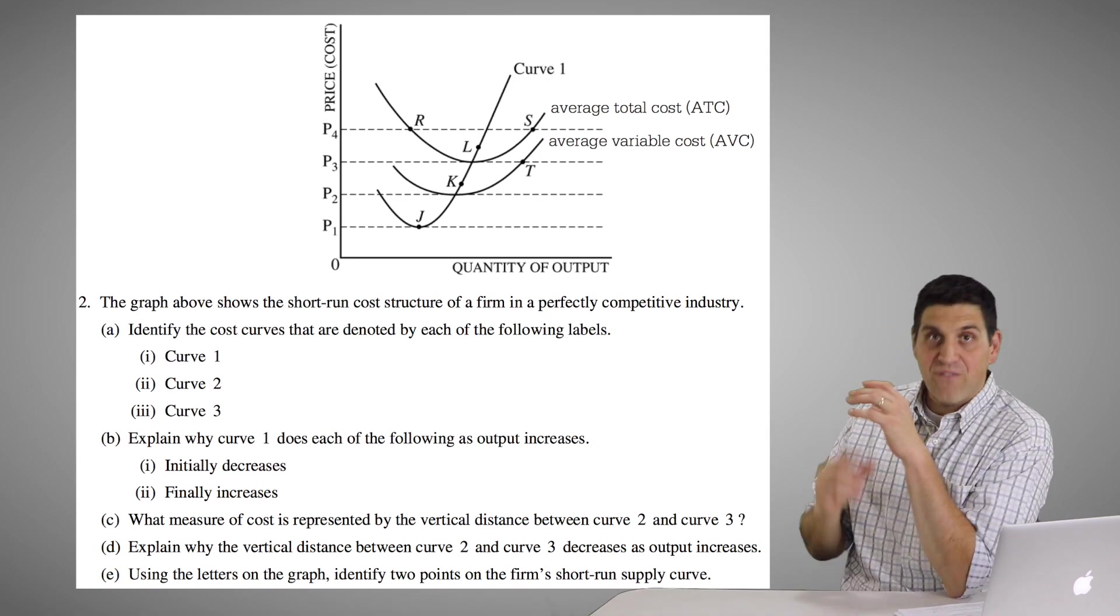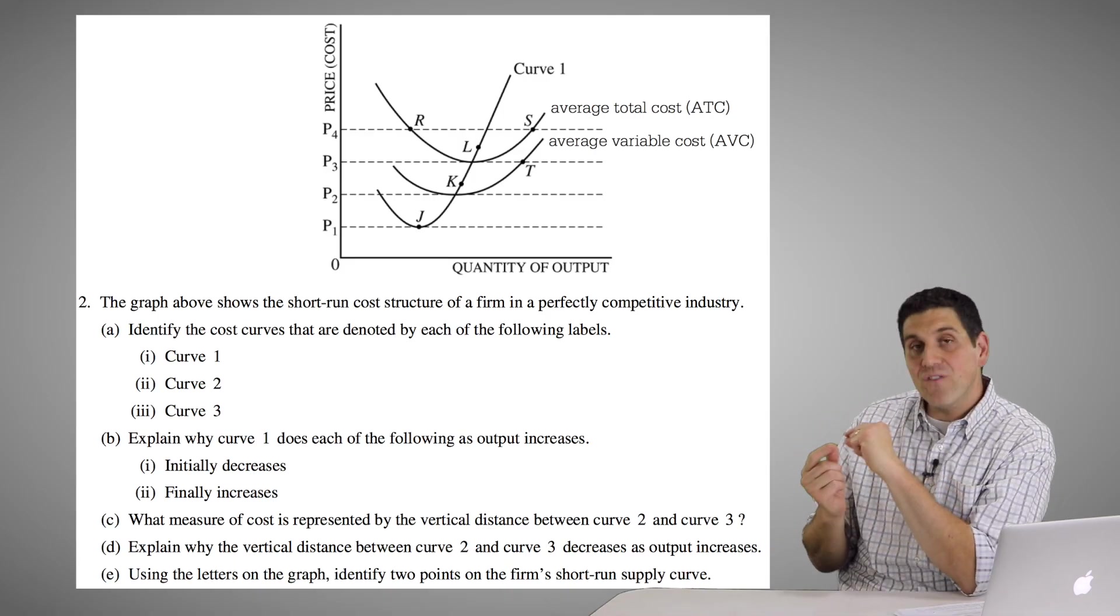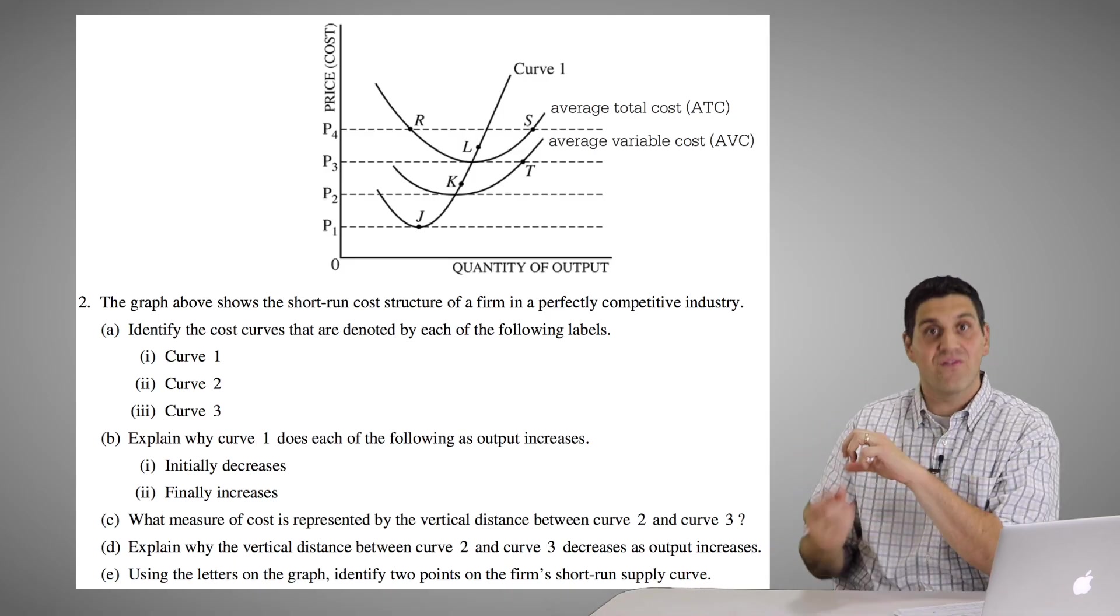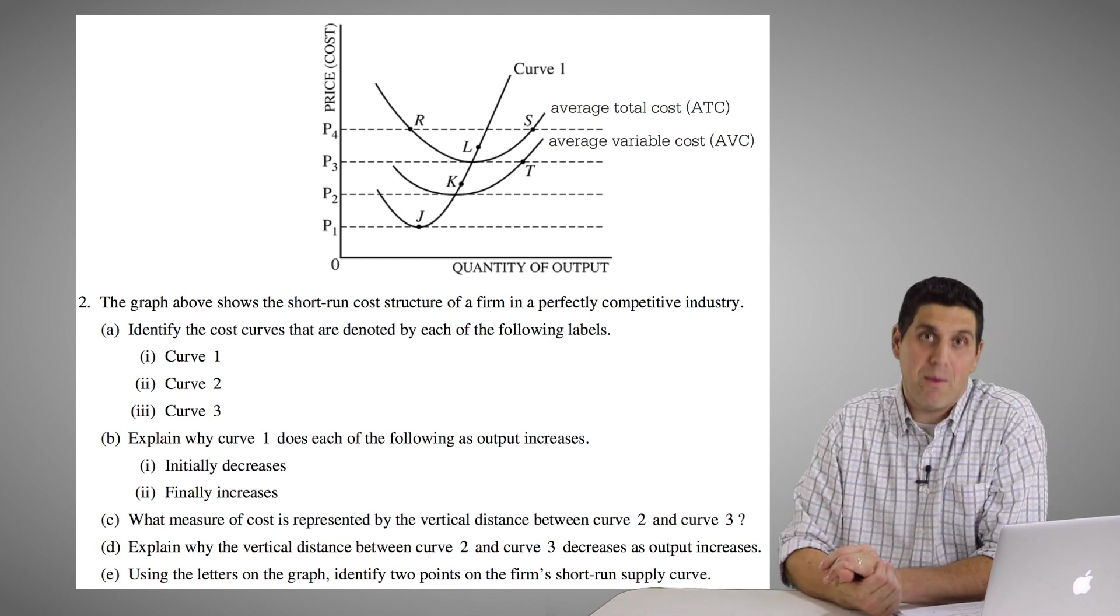So again, one more time, if you have a fixed cost that's set, as you produce more and more output, the average fixed cost, the fixed cost divided by the quantity, is going to keep getting smaller and smaller and smaller as you produce more output.